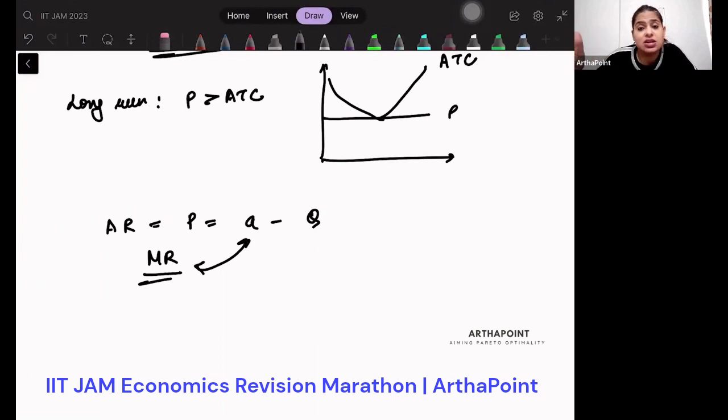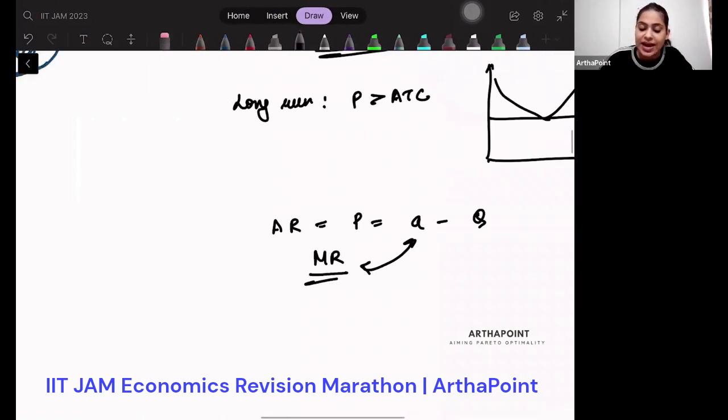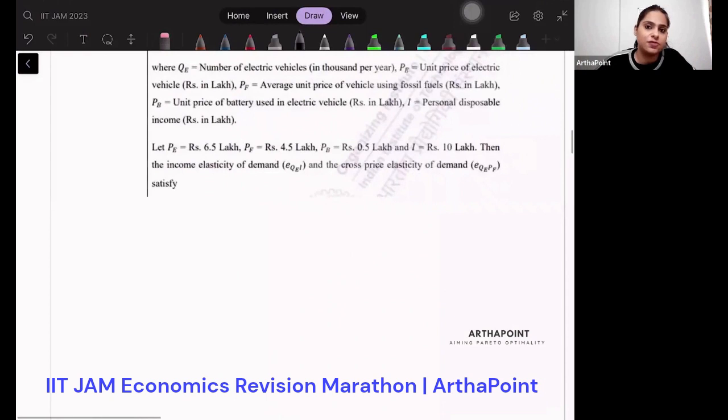What is first degree price discrimination? What is the consumer surplus in that? Second degree price discrimination. Third degree price discrimination. What are the properties of monopolistic market? How does it club both monopoly and perfect competition? You should know that. So that lecture is important. That properties itself will cover your one-mark issues very well.